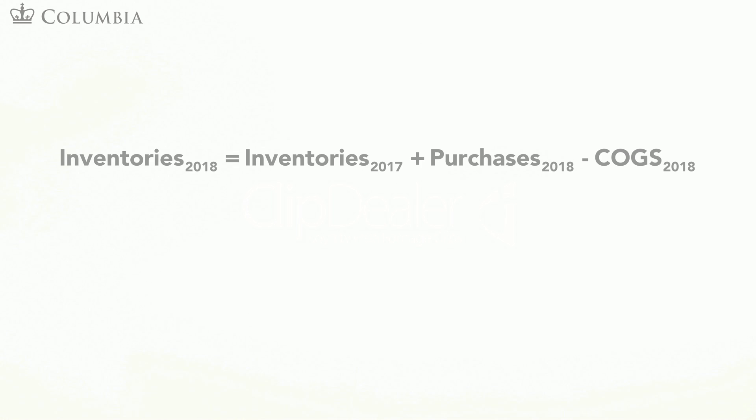Should we also try to estimate it? It might appear we need to do this, but in fact we have estimated so many items of the 2018 financials that we have already pinned down purchases. Recall the equation for the evolution of inventories and apply it to 2018 — we know the final level of inventories in 2018.